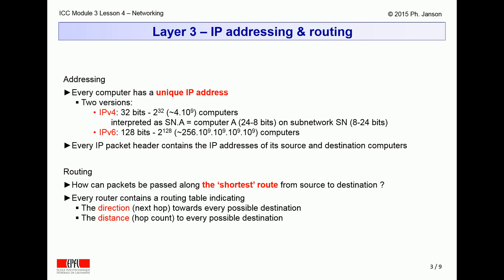Such addresses are interpreted as structured into a subnetwork number SN and a computer number A, where SN can vary between 8 and 24 of the 32-bit address, while A, the number of the computer on that subnetwork, can vary between the remaining 24 and 8 bits of the total 32.